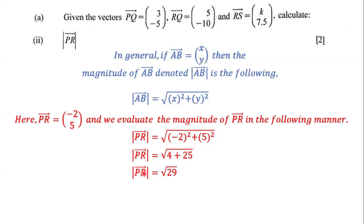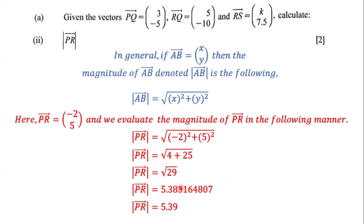The magnitude of PR is equal to the square root of 29, which equals 5.385164807. To write this correct to two decimal places: since the third decimal digit is 5 or greater, we round up, adding 1 to 8 to get 9. So the magnitude of PR is equal to 5.39, correct to two decimal places.